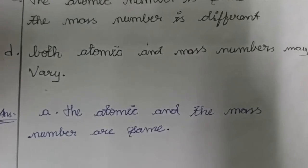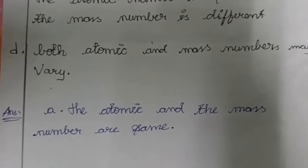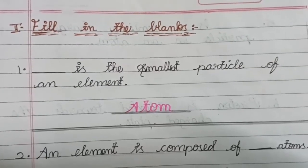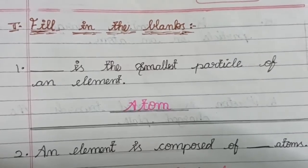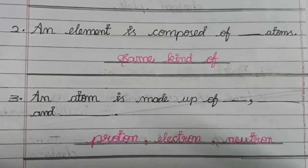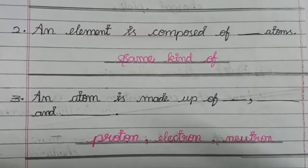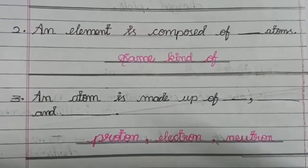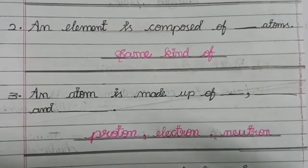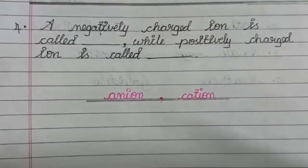The Atomic and the Mass Number are Same. Roman Letter 2 — Fill in the Blanks. Question No. 1 Answer Atom. Question No. 2 Answer Same Kind Of. Question No. 3 Answer Proton, Electron, Neutron.